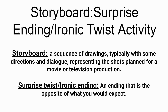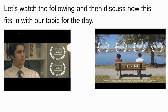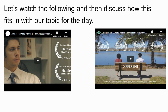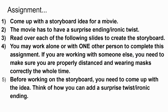The activity for today is called the Storyboard Surprise Ending Ironic Twist Activity. When you're pitching a movie or a TV show, people will make a storyboard to give a general idea of how the story is going to go. A storyboard is a sequence of drawings, typically with some directions and possibly some dialogue, representing the shots planned for a movie or television production. Every story we've read has had a surprise twist ironic ending — an ending that's opposite of what you'd expect. There are two short award-winning films linked; both have twists. They're only about four to five minutes each, so take some time to watch those.